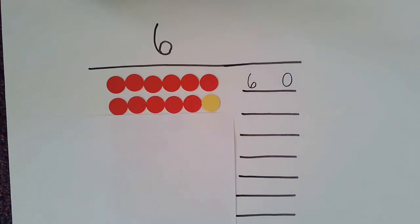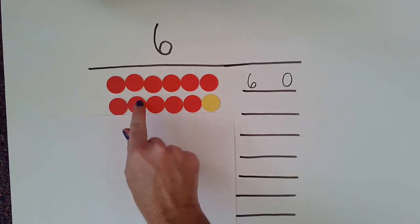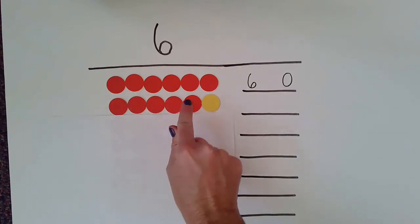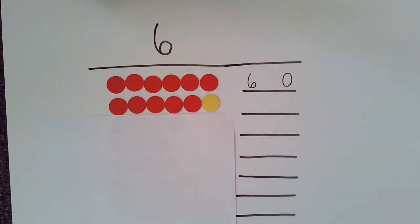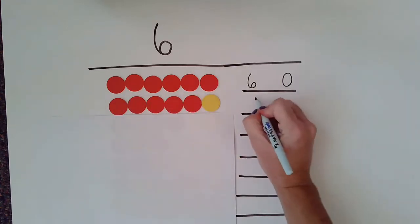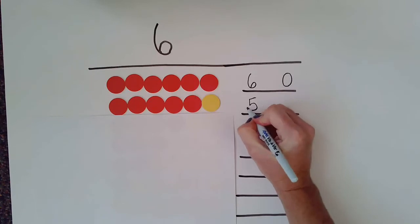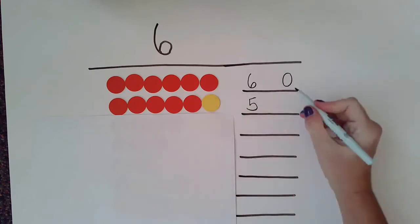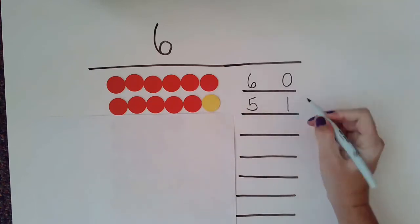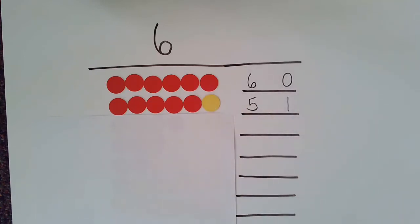Now I have one, two, three, four, five reds and one yellow, which means five and one are number partners for six.